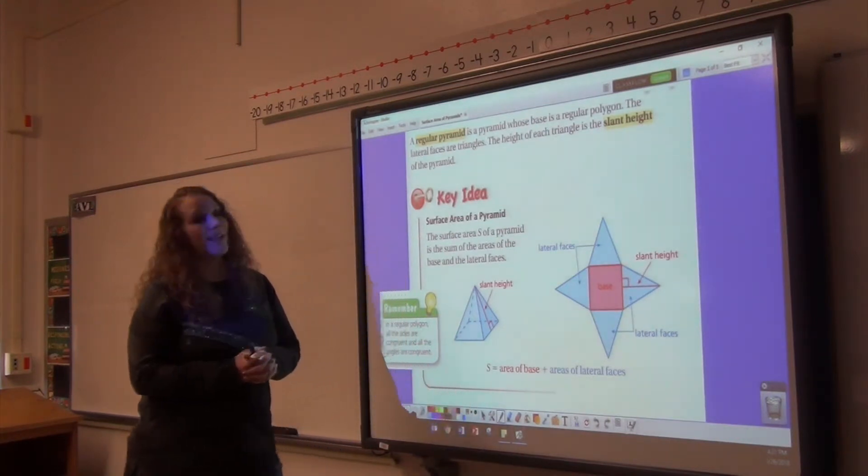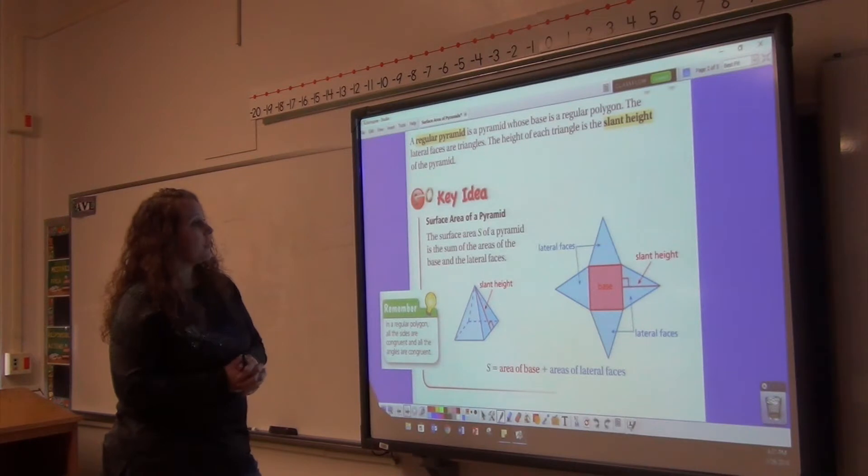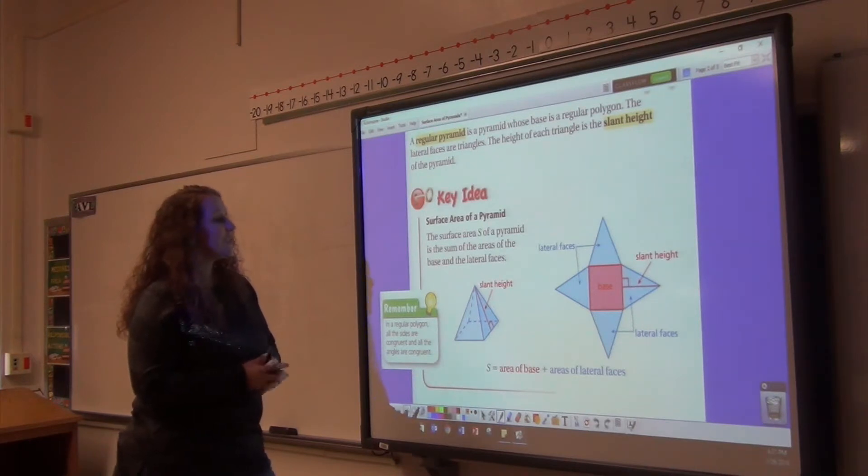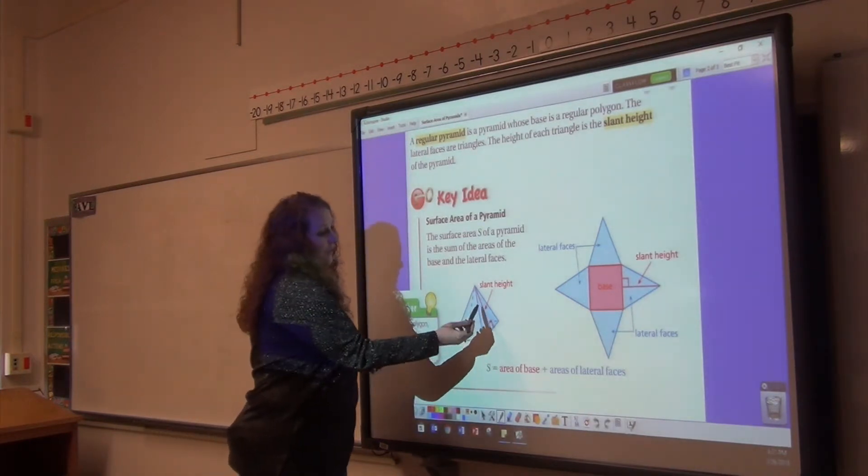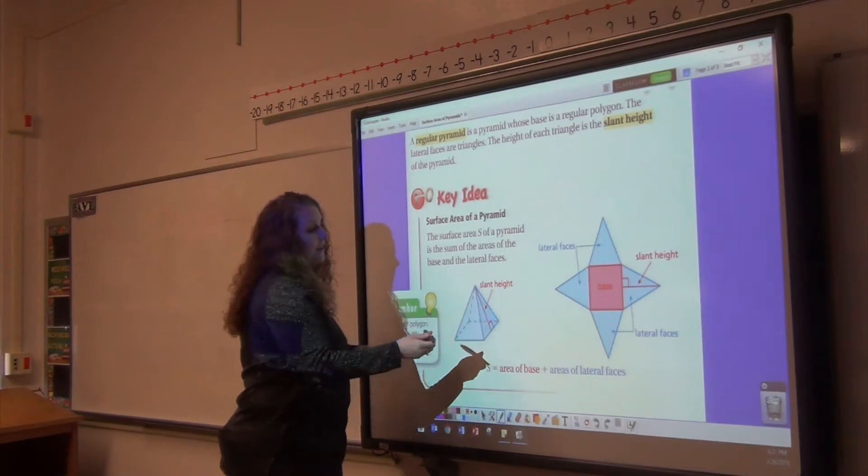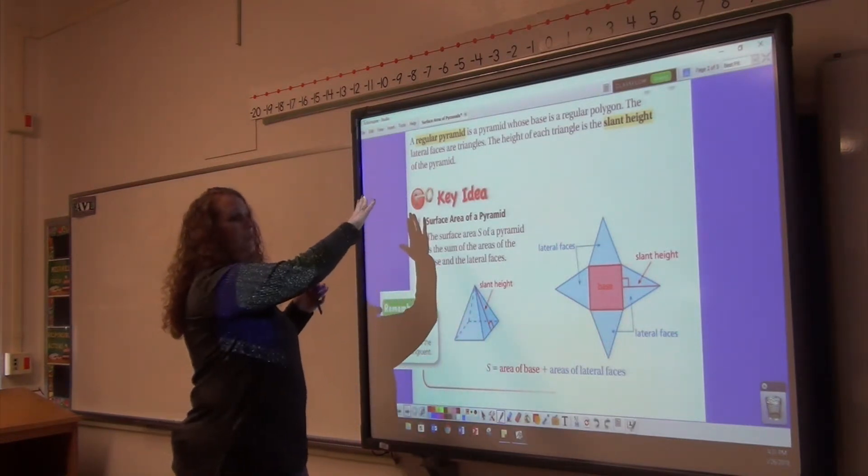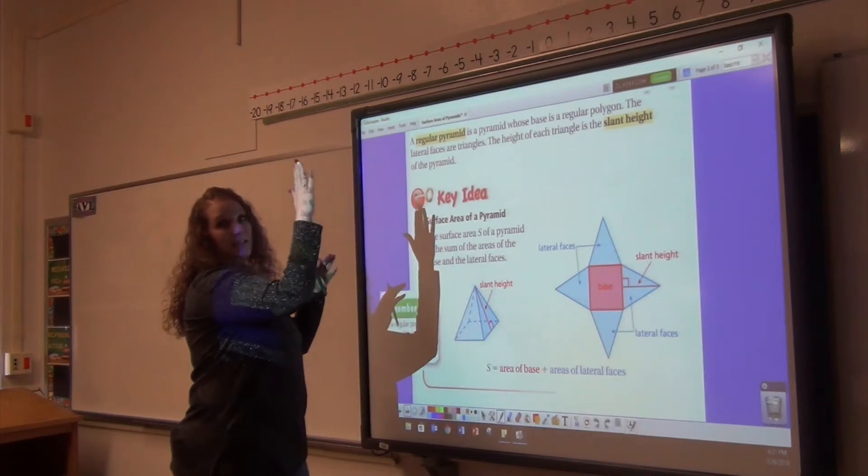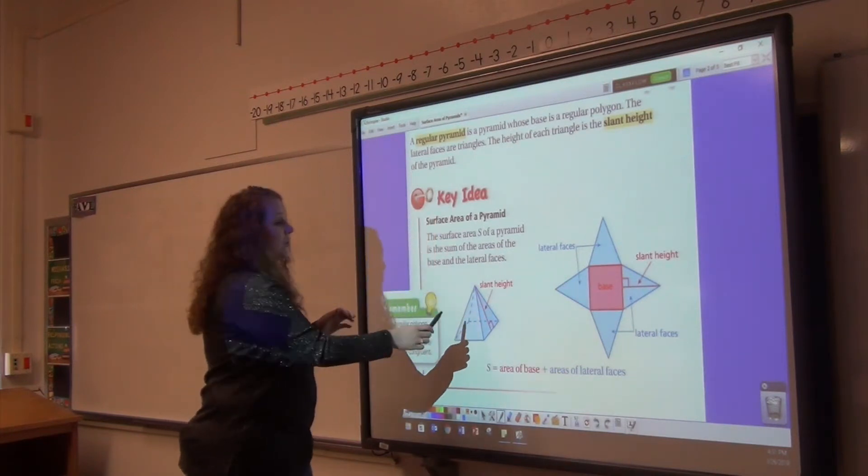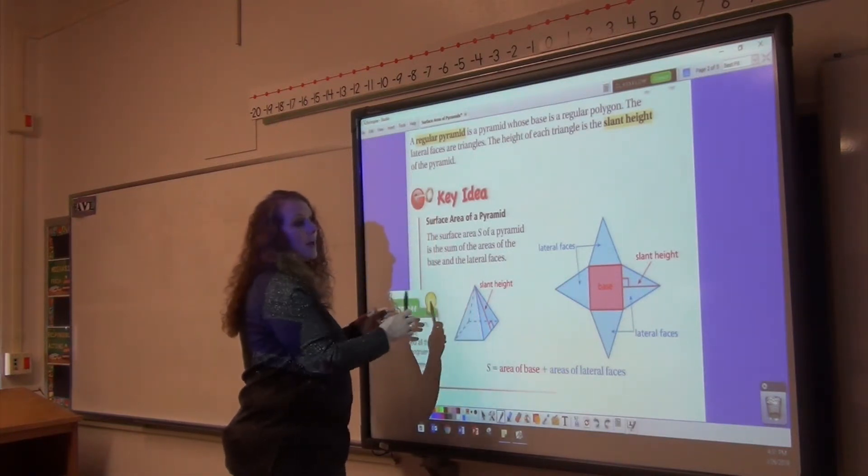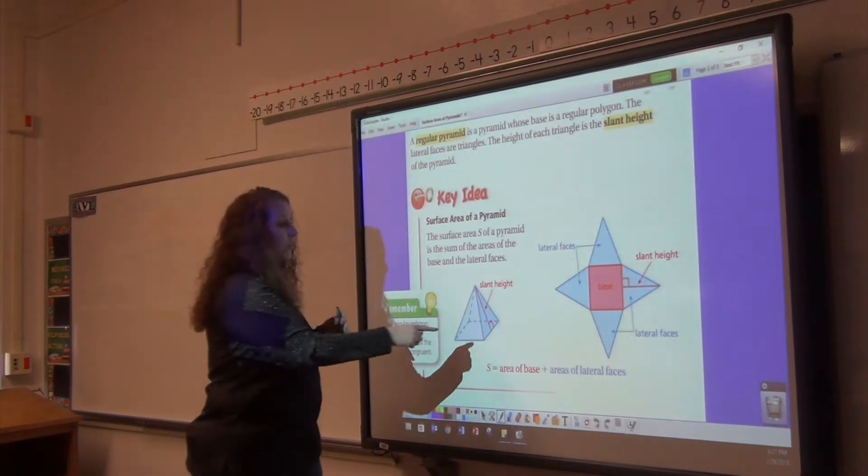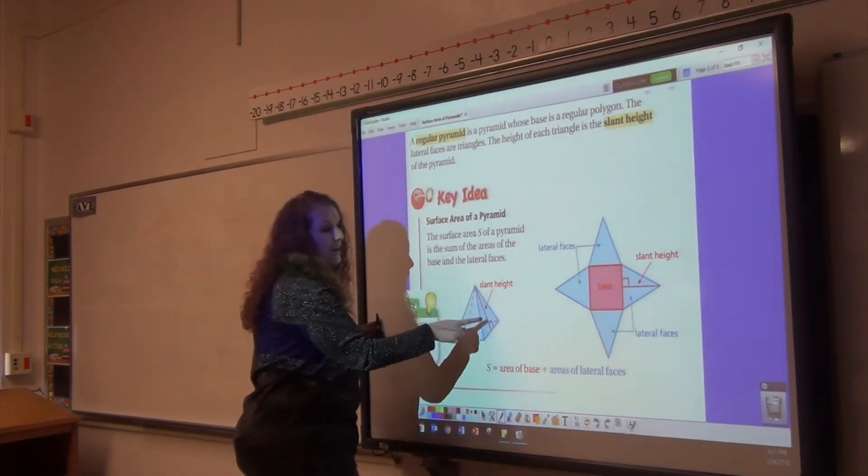Very important, when you are using the height of the pyramid, you are going to use the slant height. So what that is, is it's the height. It's going to look like it's not as tall because it's slanted, but it is the height. You're not using the height from the center of the pyramid up. You are using the slant height or the height of this triangle right here.